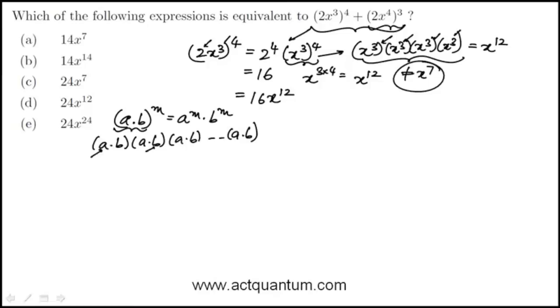Now, if we look at the second piece of this as 2x4 to the third, we do the same thing: 2 cubed times x4 to the third. Now that is 8, and then we get, in this case, x to the 12.